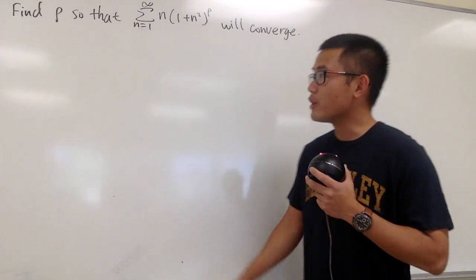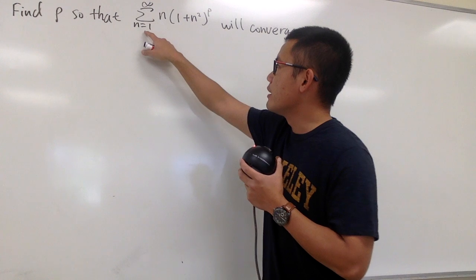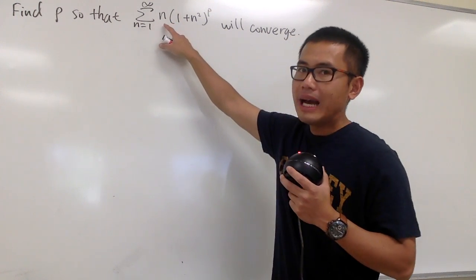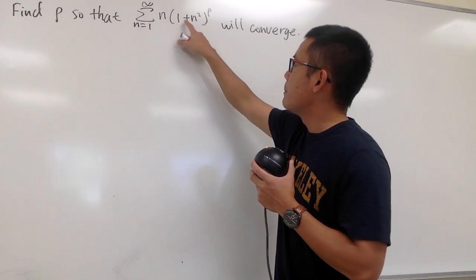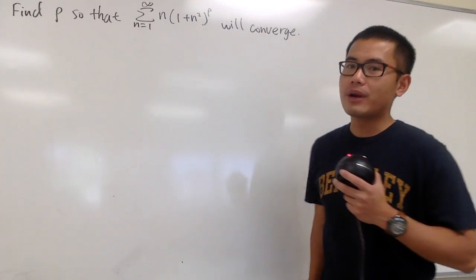Okay, we're going to find the values of p so that this series will converge. We can see this is the series when n goes from 1 to infinity, and here we have n times the parentheses with 1 plus n squared, instead of this parentheses, and then raised to a p's power.